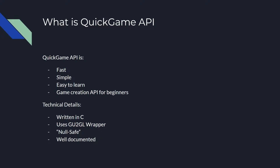So what is the Quick Game API? The Quick Game API is a fast, simple, easy-to-learn game creation API for beginner programmers. The technical details are that it's written in C, it uses the gu2gl wrapper, it is null safe — so passing a null into most functions will not cause any undefined behavior — and it is also well documented. This documentation exists in the header files, with a very good explanation for every single function inside the API.